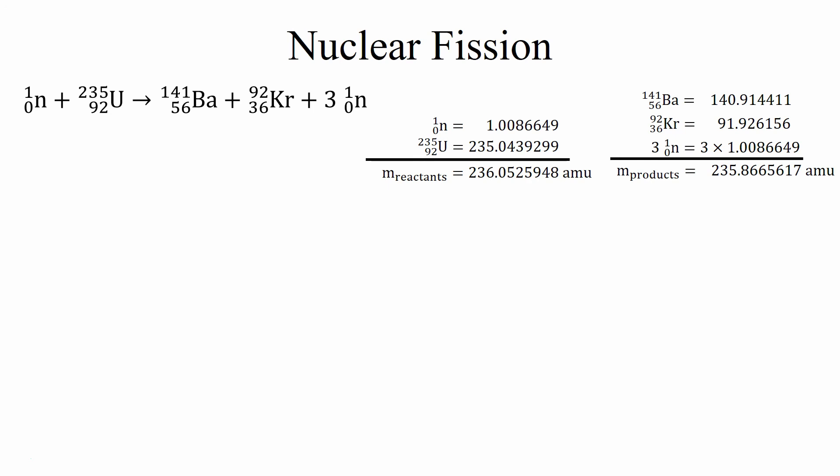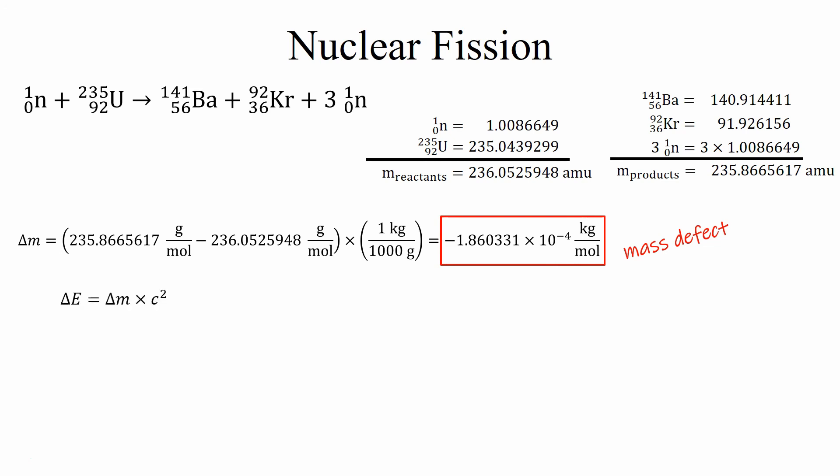Here we have the total sum mass of the reactants and the total sum mass of the products. We're going to calculate the difference and convert that into kilograms per mole. We find our mass defect. Now we plug this into E equals MC squared and we get our energy produced per mole of uranium-235.